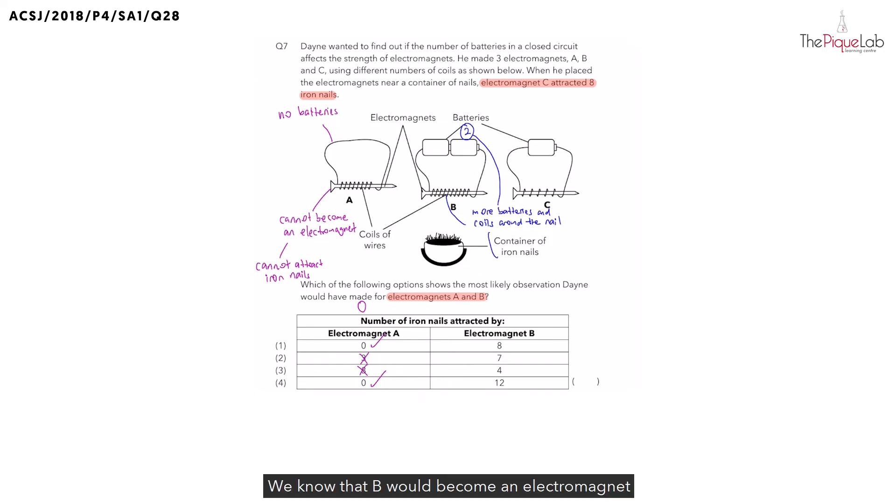We know that B would become an electromagnet with a greater magnetic strength than C.